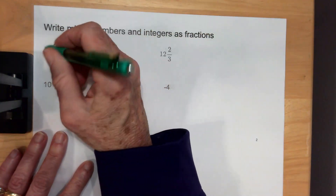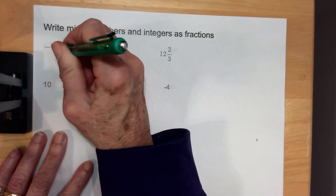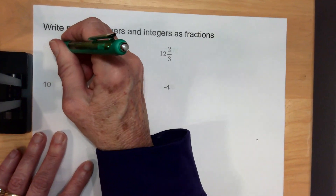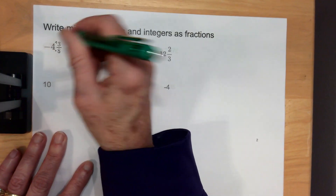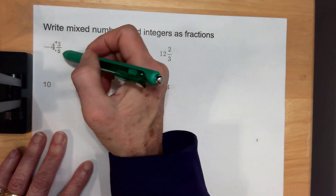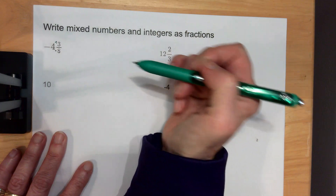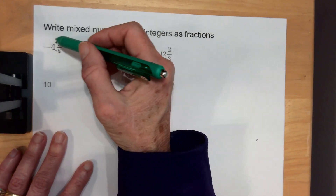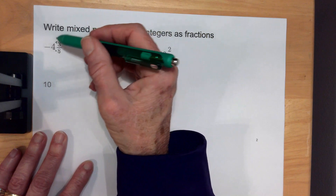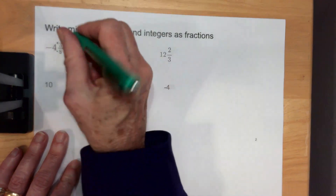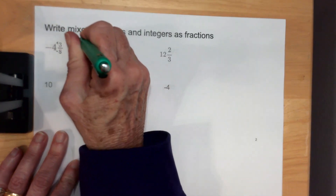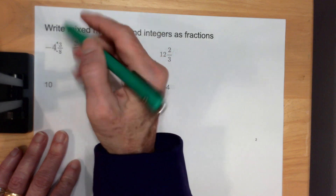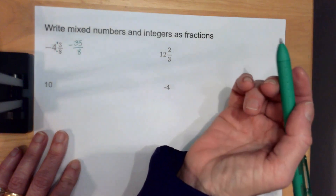Remember, if you have a mixed number, you're going to multiply the bottom number — the denominator — times the whole number. Then you're going to add the numerator and place it over the denominator. So 8 times 4 is 32, and 32 plus 3 would be 35. So I have 35 over 8. And if this was negative, this is negative.